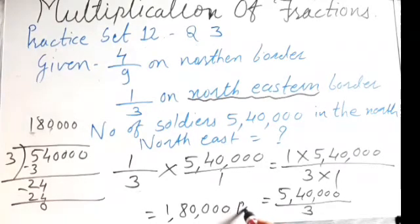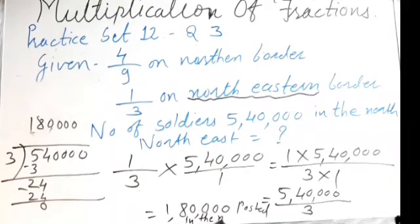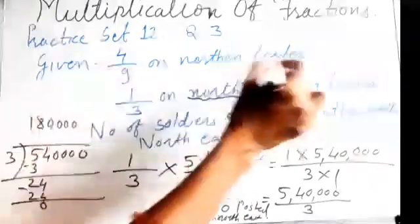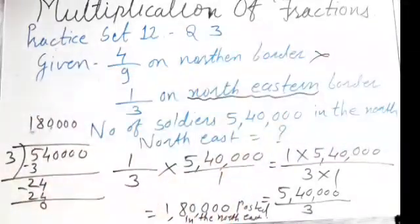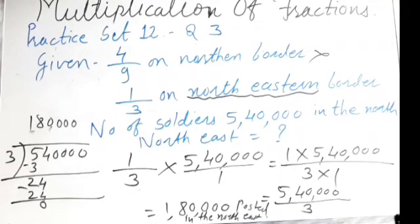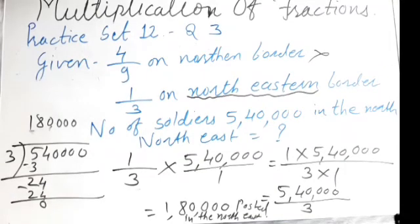So for this example, we did not use the four-upon-nine information because it was not needed — they asked only about the north-eastern border. We got the answer: one lakh eighty thousand soldiers are posted in the northeast. Now complete Practice 12, question numbers one, two, and three.